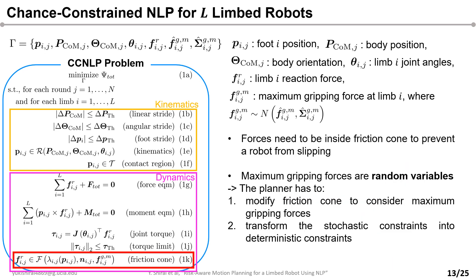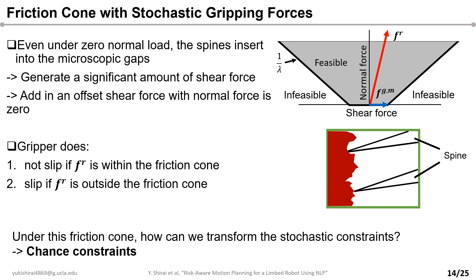In this presentation, we focus on discussing constraint 1k. Constraint 1k is a friction cone constraint that ensures the reaction force is inside the cone to prevent the robot from slipping, where lambda denotes the coefficient of friction. Because Fgm is a random variable, equation 1k is a stochastic constraint. Hence, we need to convert these stochastic constraints into deterministic constraints for the planner to manipulate. Furthermore, we also need to modify the regular friction cone to take into account the stochastic gripping forces.